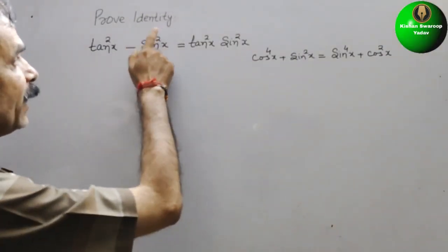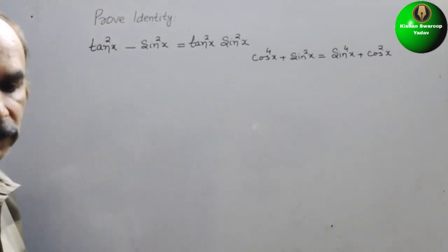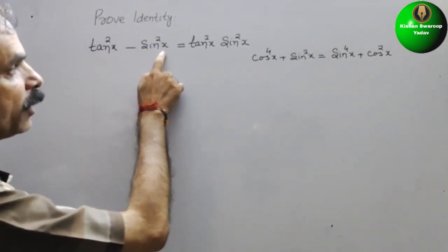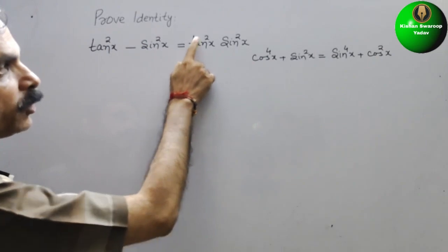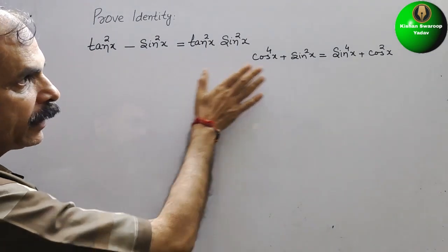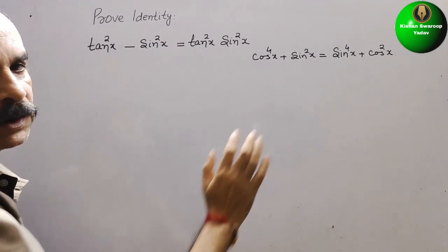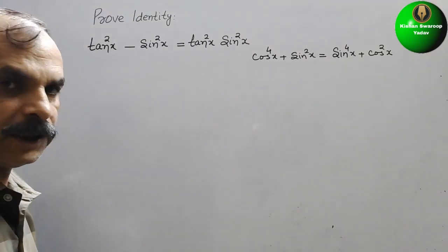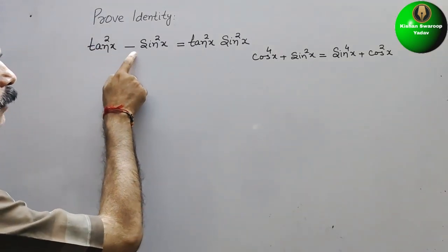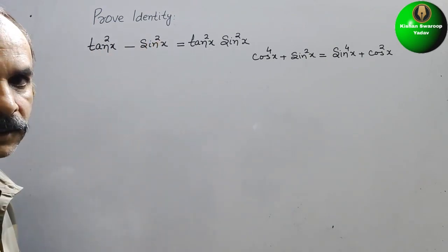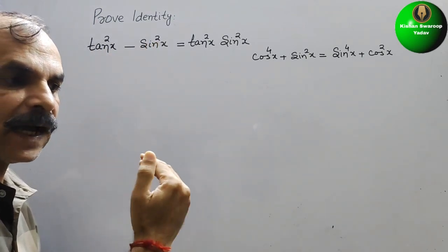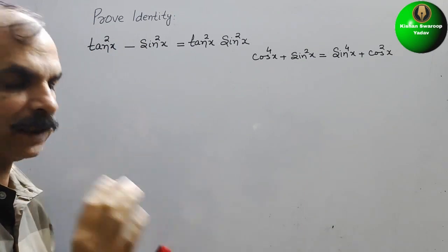Your question is to prove the identity. See what they have given: tan square x minus sin square x is equal to tan square x times sin square x. So first we will solve the left-hand side. Here they have given tan square x minus sin square x, and we will write it in terms of sin and cos — that means the basic form.